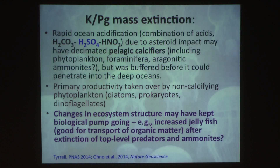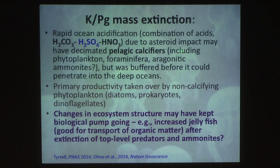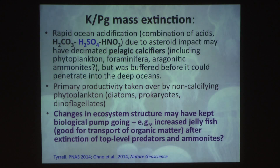And so if you look at the end of the Cretaceous, you can argue that rapid ocean acidification — a combination of acids, because you threw an asteroid on sulfate-bearing limestones, liberating carbon dioxide as well as sulfates, and your asteroid went through the atmosphere heating it up, making nitric acid — may have decimated the planktic calcifiers, including phytoplankton, forams, and ammonites. But it was buffered before it could penetrate into the deep oceans. The primary productivity was then taken over by non-calcifying phytoplankton such as diatoms, prokaryotes, and dinoflagellates. So it was not true that total ocean productivity declined by 95-97%. The productivity by calcifiers declined. The change in the ecosystem structure may have kept the biological pump going, and for instance you could have increased jellyfish, which are good for the transport of organic matter, after the extinction of top-level predators and ammonites.